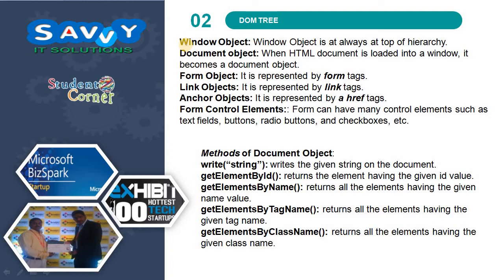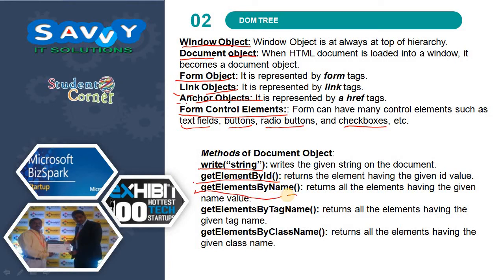The Window object is always at the top of the hierarchy. When an HTML document is loaded into a window, it becomes a Document object. The Form object is represented by form tags. Link objects are represented by link tags. Anchor objects are represented by href tags. Form control elements can have many control elements such as text fields, buttons, radio buttons, and check boxes. Methods of the document object include: write() — writes the given string on the document; getElementById() — returns the element having the given id value; getElementsByName() — returns all elements having the given name value; getElementsByTagName() — returns all elements having the given tag name; getElementsByClassName() — returns all elements having the given class name.